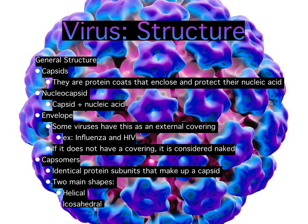Virus structure. All viruses are made up of some genetic material, whether it be DNA or RNA, but cannot be made up of both. Every virus has a capsid, which is made up of capsomers, and a nucleocapsid. Some have envelopes, meaning it has a cover, and others are naked, meaning it has no cover. Some examples of enveloped viruses are influenza and HIV. There are two main shapes a virus can have, but some viruses have a mix of both.